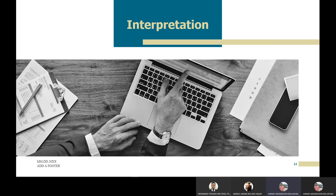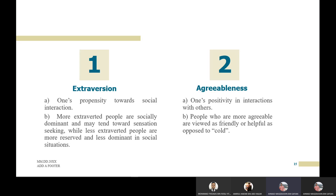Bismillahirrahmanirrahim. Thank you, Firdaus. My name is Ahmad Muizuddin, student ID 1171013. I will continue with the interpretation of the instrument's constructs. The first construct is extraversion — defined as one's propensity towards social interaction. More extraverted people are socially dominant and may tend toward sensation-seeking, while less extraverted people are more reserved and less dominant in social situations.